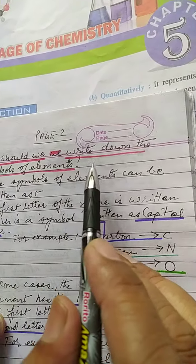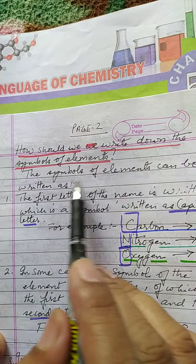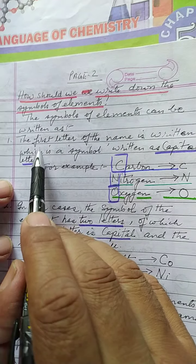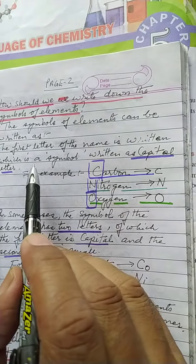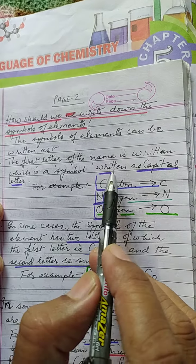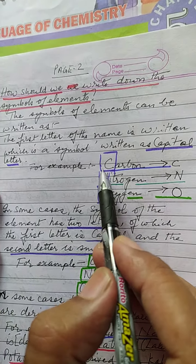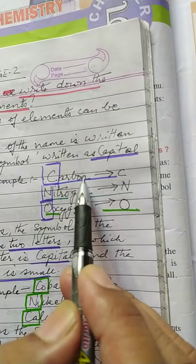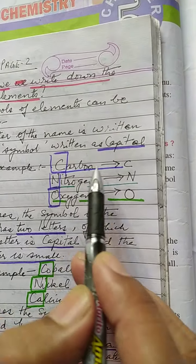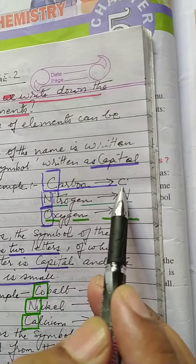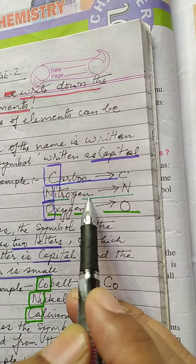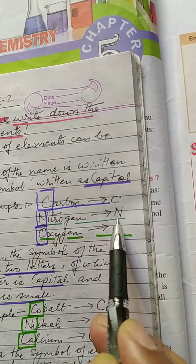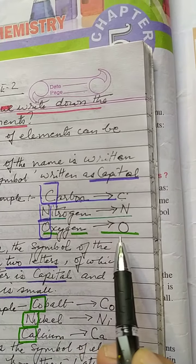How should we write down the symbols of elements? The symbols of elements can be written using the first letter of the name, written as a capital letter. For example, in carbon we use the first letter C. To represent nitrogen we use N, and likewise for oxygen we have the symbol O.